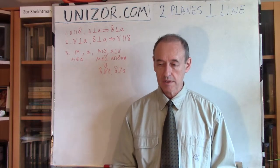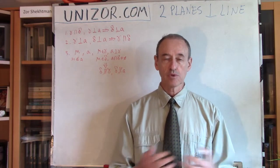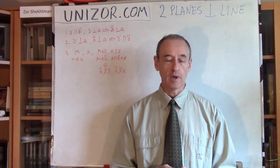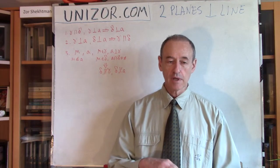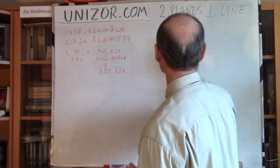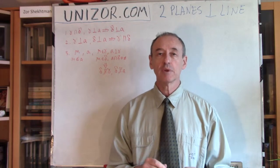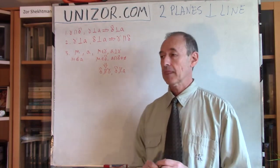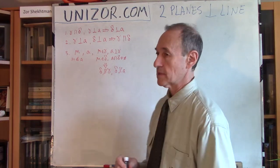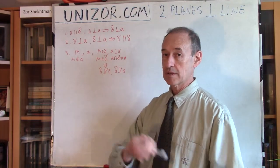The previous lecture was about two lines and a plane, and I was talking about when they are perpendicular, parallel, etc. This lecture is basically like a mirror image of the previous one, because now I have two planes and a line. Again, it will be very similar theorems — the same three theorems as before, but instead of planes there will be lines, and instead of lines there will be planes.